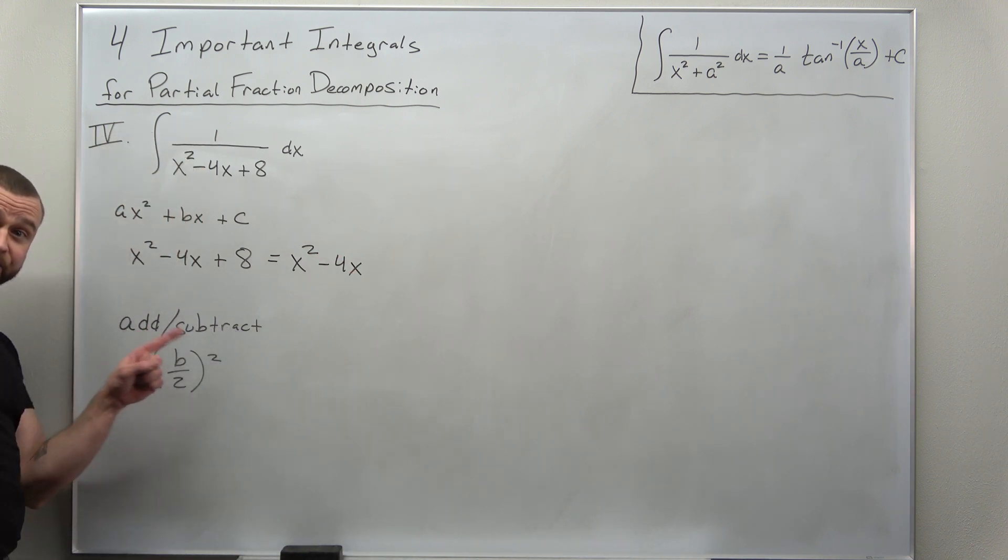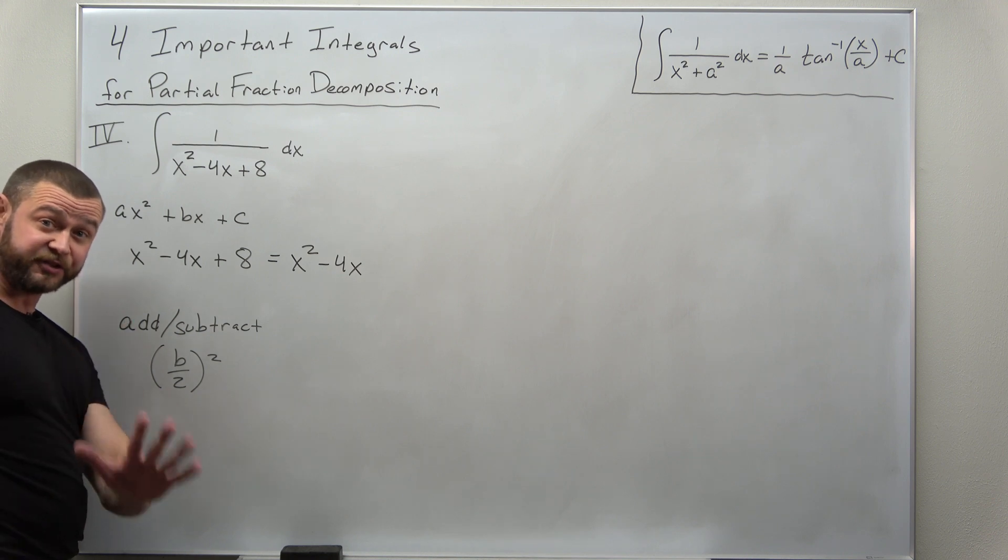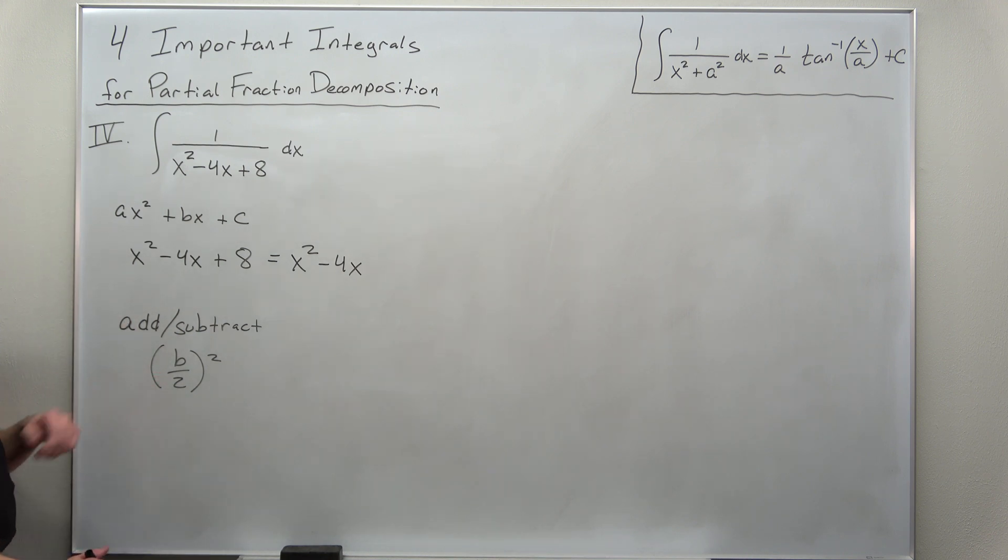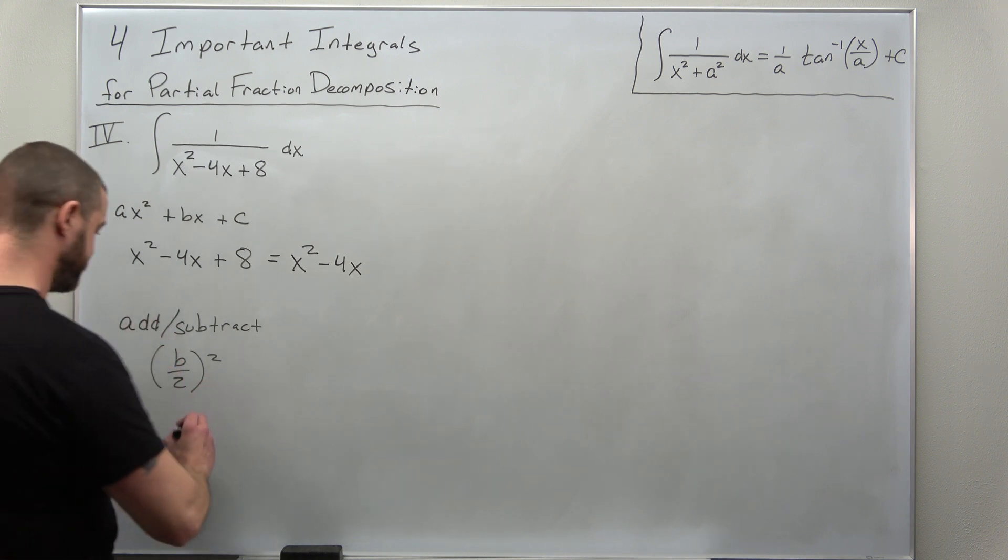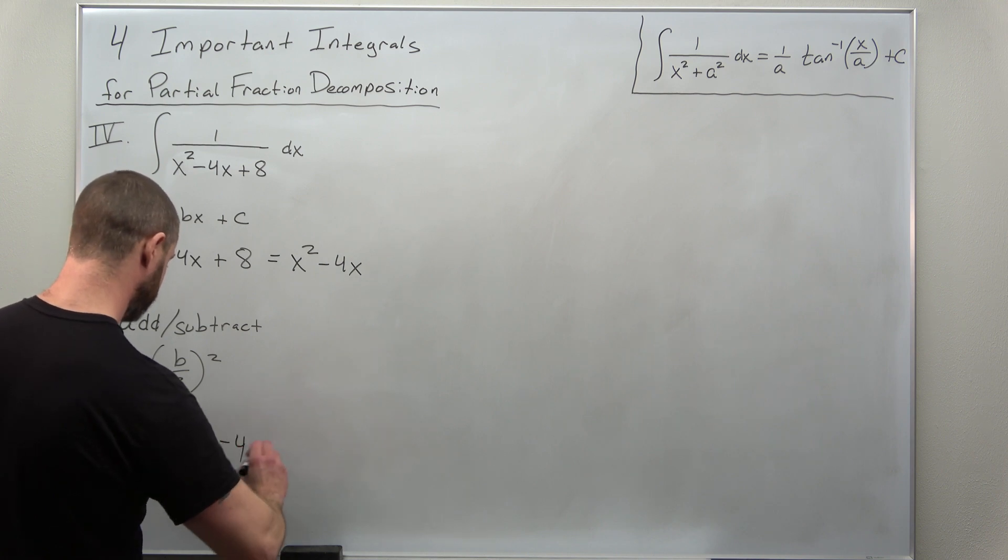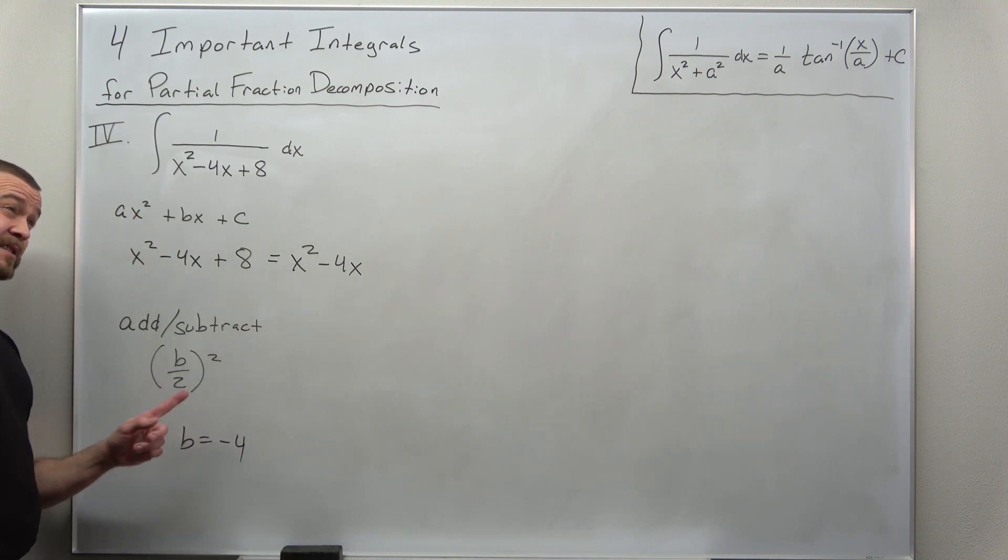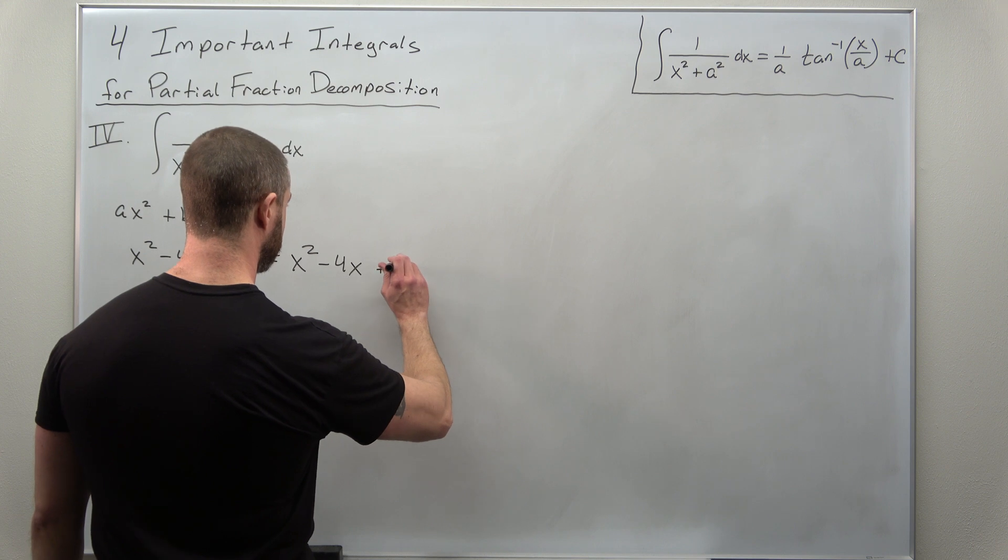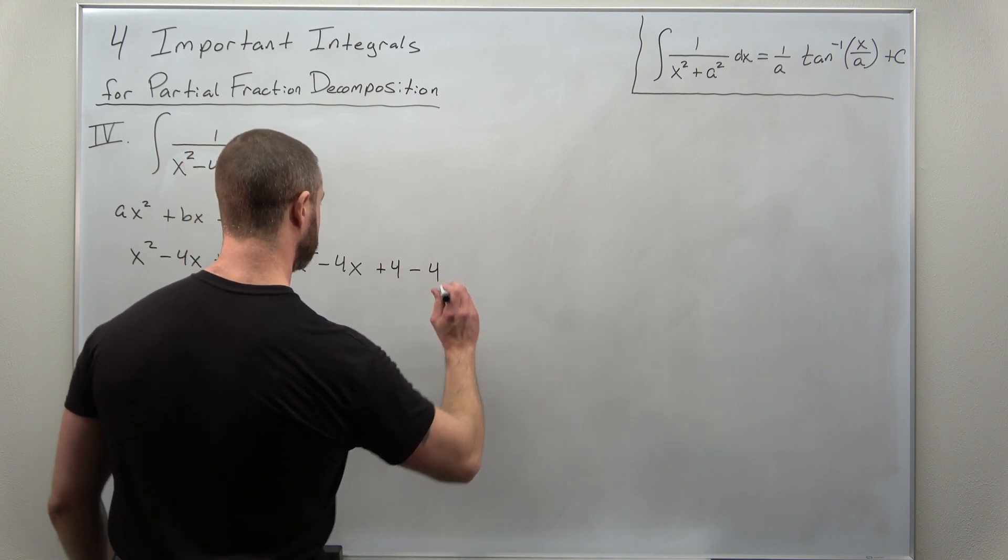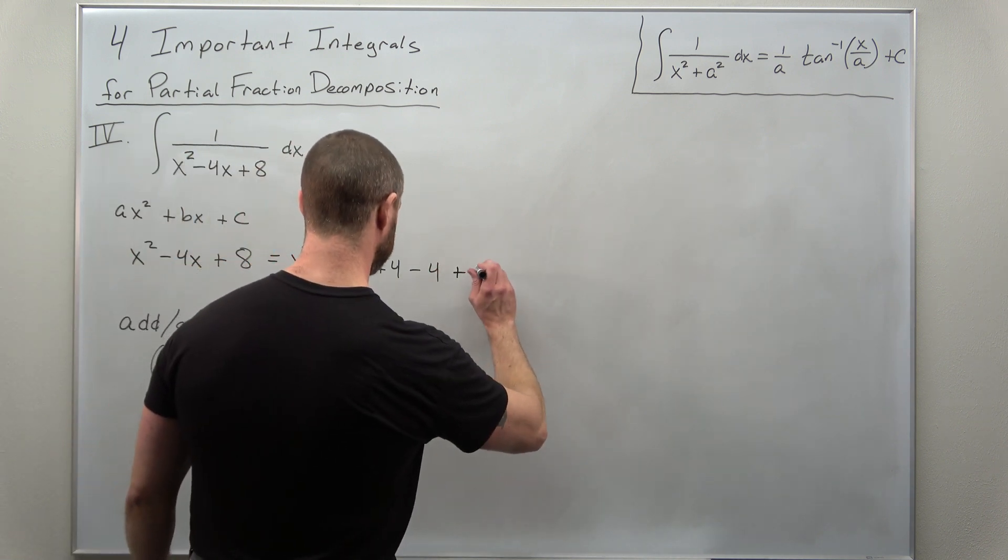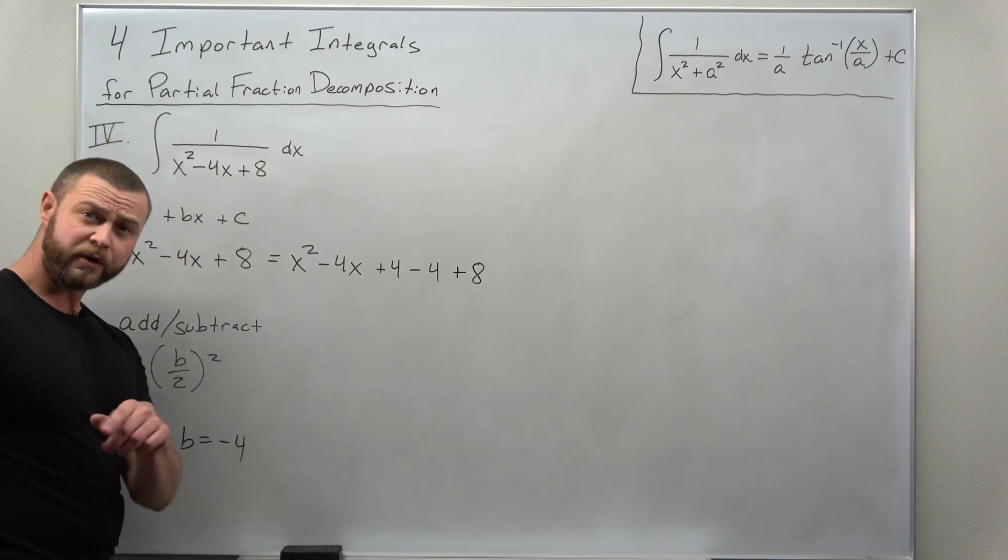We have x squared minus 4x. We're going to add and subtract the same number. So we're really adding 0, which is totally allowed. So what is this value that we're going to add and subtract? Well, we take b, which is here, negative 4. We're going to divide that by 2. So we get negative 2, negative 2 squared is 4. So we're going to add and subtract 4. So add 4, subtract 4, but don't forget about the plus 8.